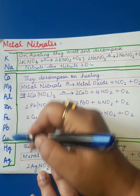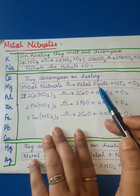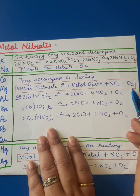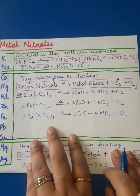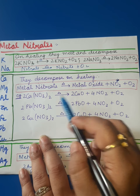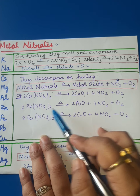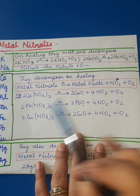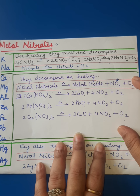For the second category — calcium to copper — their metal nitrates also decompose on heating. The equation is: metal nitrate on heating decomposes into metal oxide, nitrogen dioxide, and oxygen. Nitrogen dioxide is reddish brown in color. For example: calcium nitrate → calcium oxide + NO₂ + O₂; lead nitrate → lead oxide + NO₂ + O₂; copper nitrate → copper oxide + NO₂ + O₂.